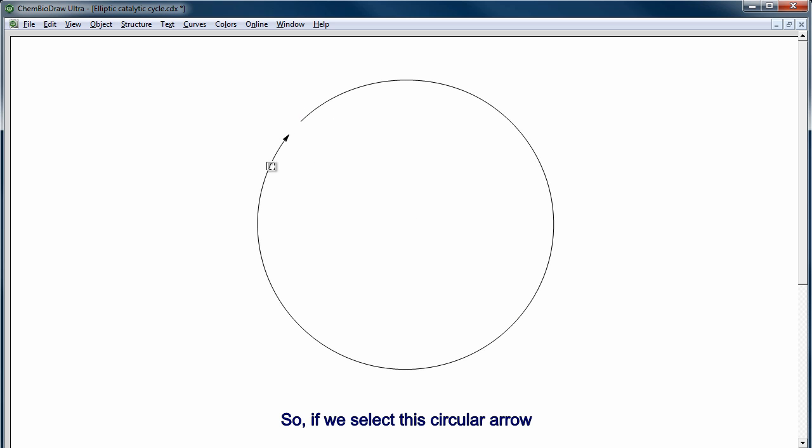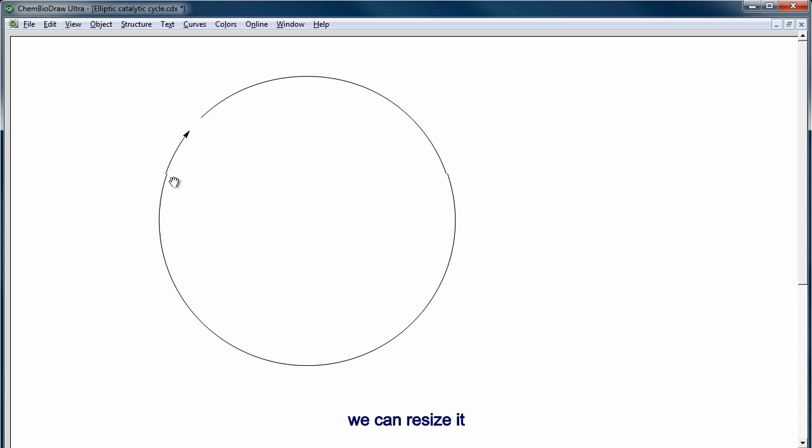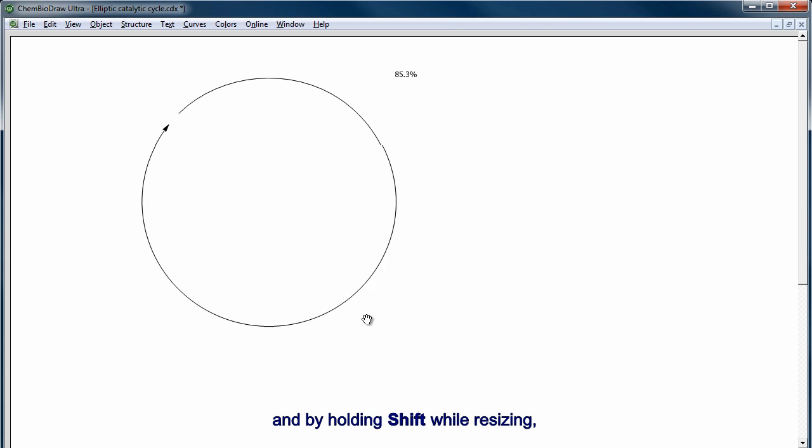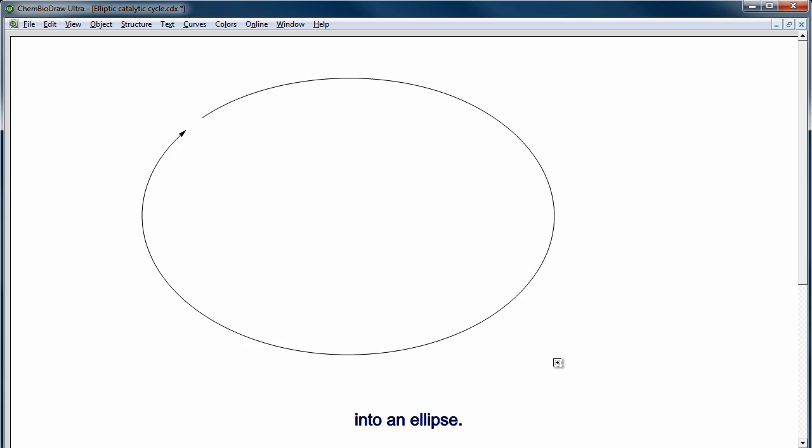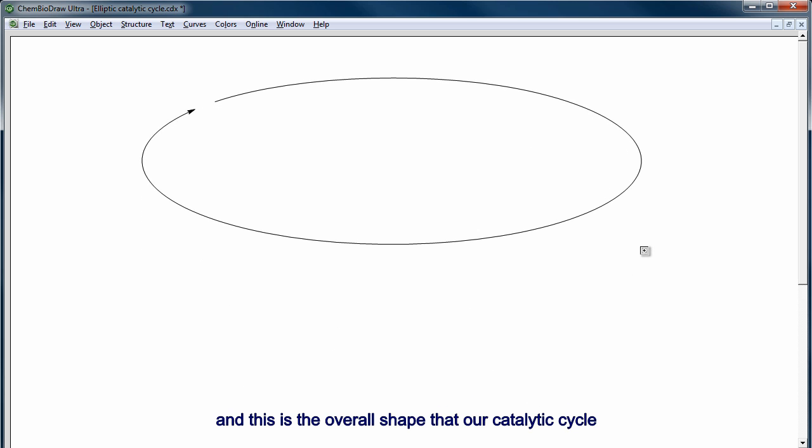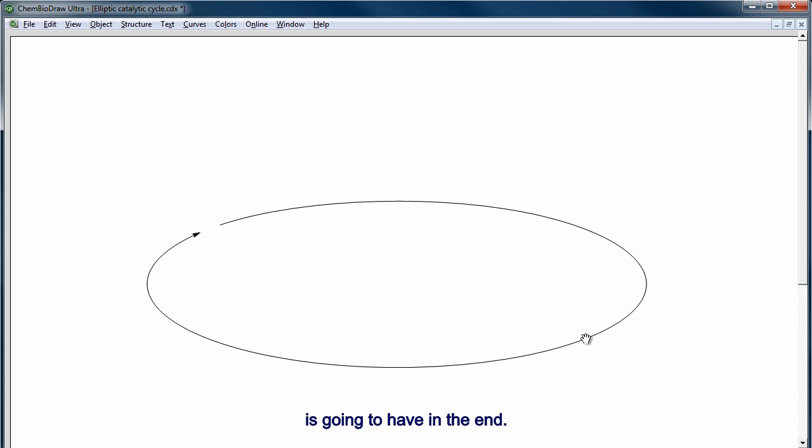So if we select this circular arrow, we can resize it, and by holding Shift while resizing, we can actually distort the circle into an ellipse. And this is the overall shape that our catalytic cycle is going to have in the end.